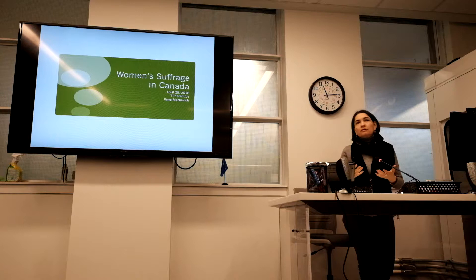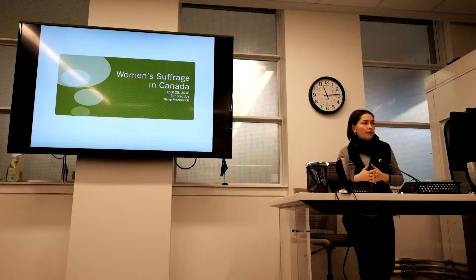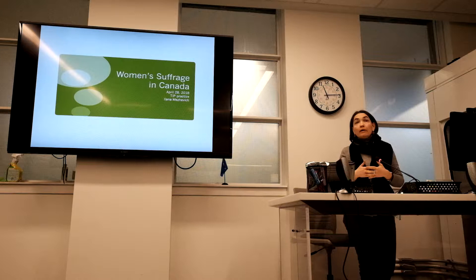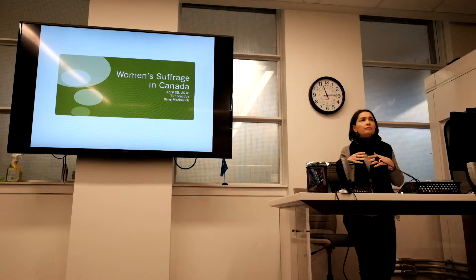The second part of my presentation will be about the Persons Case, or the Famous Five, which I'm not going to talk about right now, but I thought it will be a very useful piece of information because this is a very well-known story in Canada and it often comes up. I find that many people, myself included, have a very vague idea of what the story was, who was involved, and how it is related to voting.